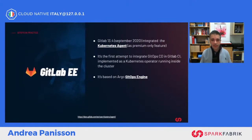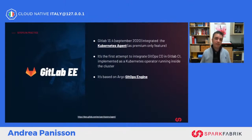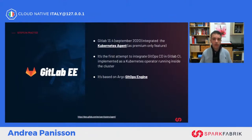A final note for GitLab users: starting from release 13.4, the Enterprise version integrates a Kubernetes agent — a native tool that allows GitOps without relying on other products. This Kubernetes agent is a Kubernetes Operator based on a library called GitOps Engine, which is also the basis for Argo CD, developed in collaboration between Argo, Flux/WeWorks, and Amazon AWS. It is approximately a one-year-old project.